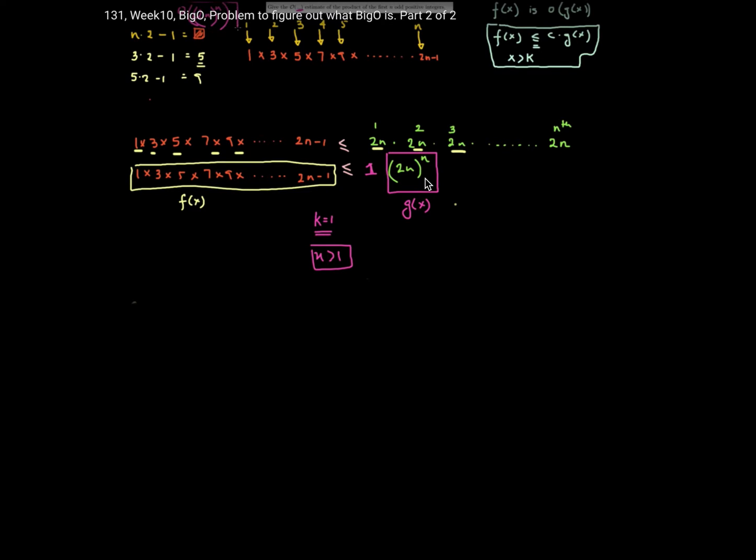So what we're going to do is figure out what is a tighter upper bound. I'll start by writing down the first n odd positive integers as 1 times 3 times 5 times 7 times 9 going all the way up to the nth odd positive integer which is 2n minus 1.